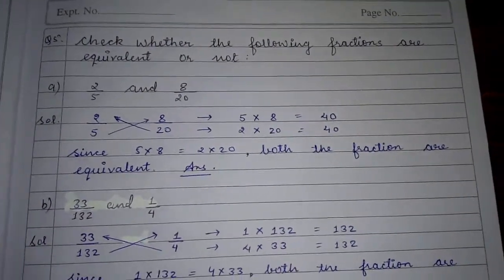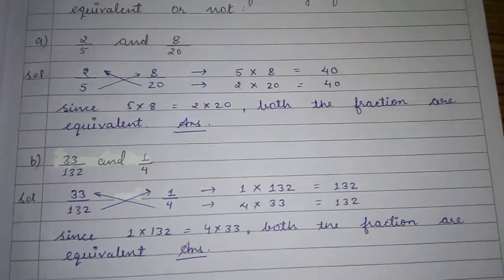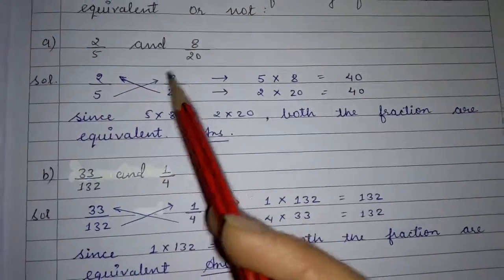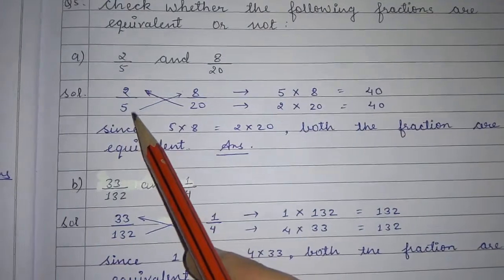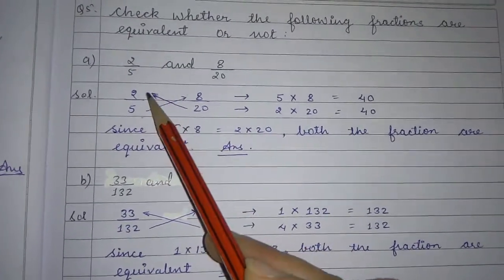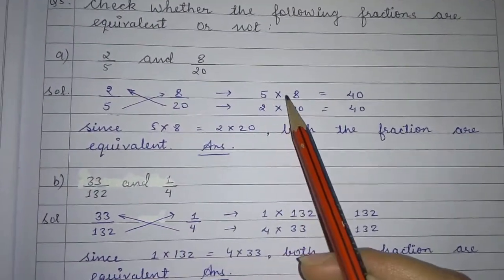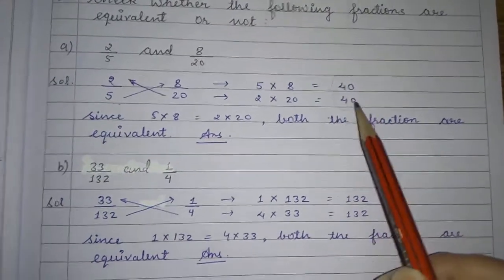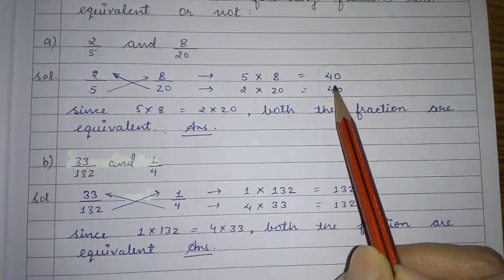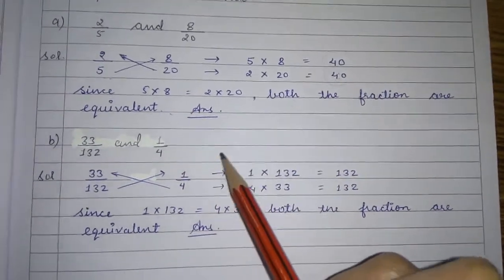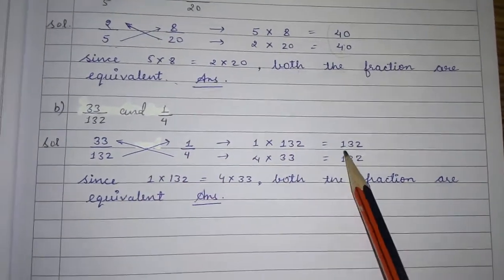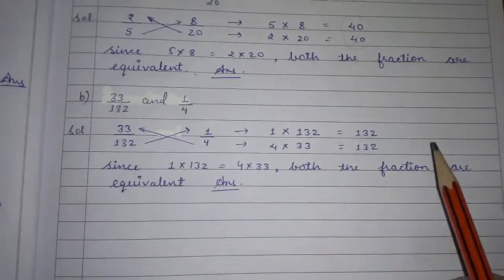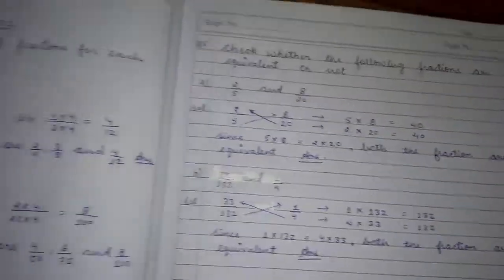Next question: check whether the following fractions are equivalent or not. Aapko batana hai ki diya hua fraction equivalent hai ya nahi. Check karne ke liye do fractions ko cross multiply karo — yaani iske denominator ka iske numerator se multiply aur iske denominator ka iske numerator se multiply. Agar dono ka result same aaye to equivalent hai. For example: 5×8=40 aur 2×20=40 — same result, so equivalent. Dusra example: 1×132=132 aur 4×33=132 — bhi equivalent hai.